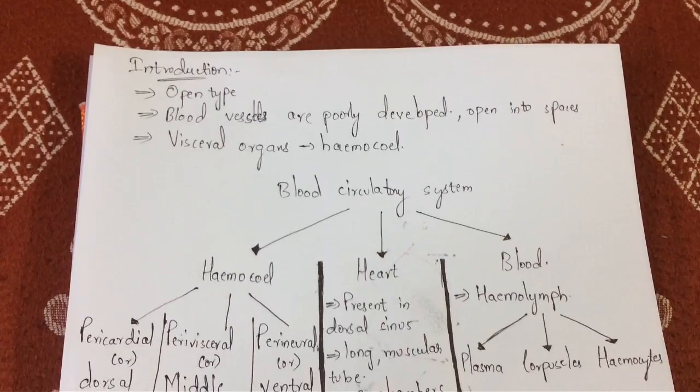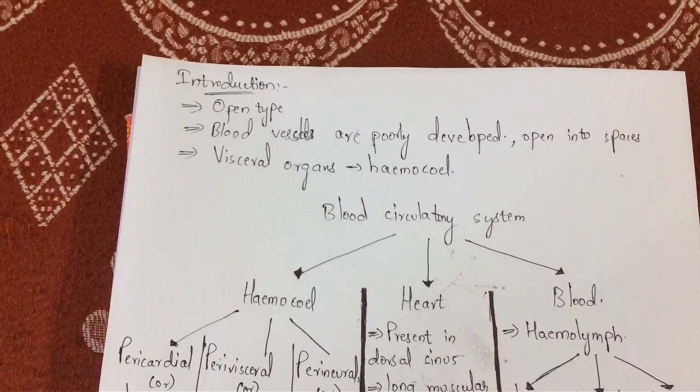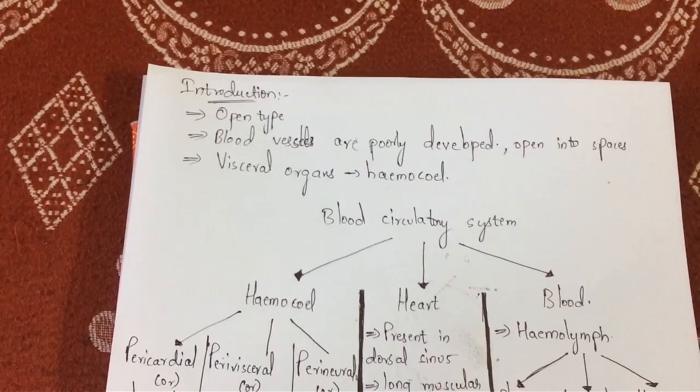What is meant by open type? It pumps blood into a hemocoel, with the blood diffusing back to the circulatory system between the cells. Blood is pumped to the body cavities where tissues are surrounded by blood — this is nothing but open type. Blood vessels are poorly developed and open into spaces.